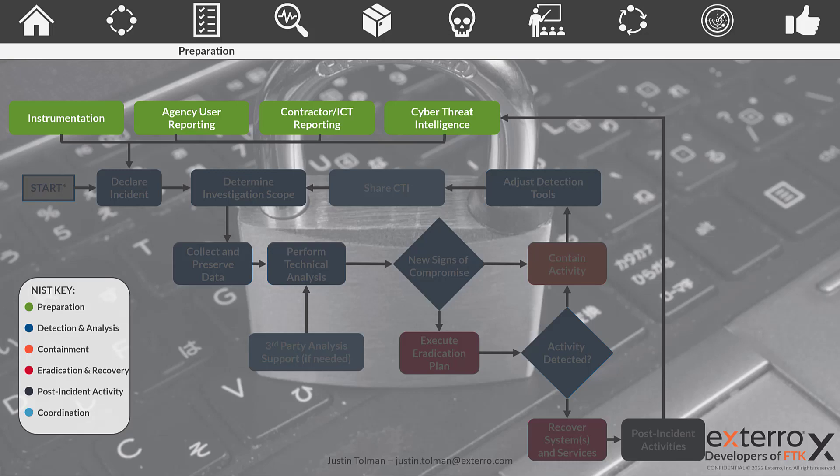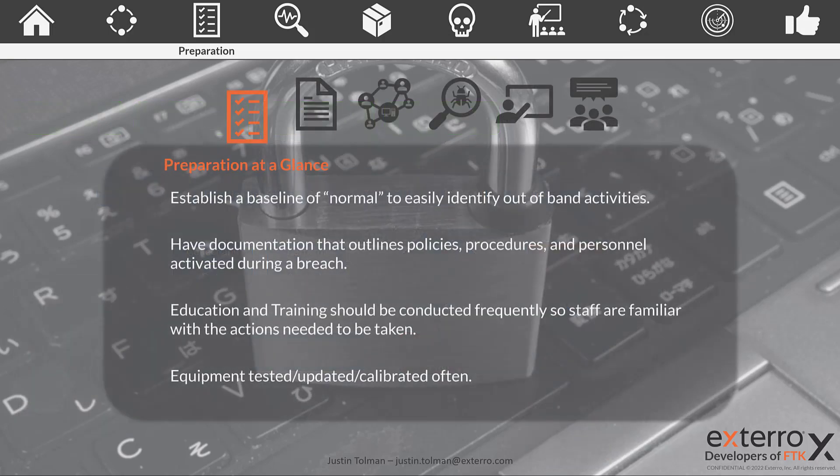So what are we hoping to accomplish in the preparation phase? We want to establish a baseline of what is normal within our network. That includes a bunch of different things: what is normal for a person or department to have access to, what is normal network traffic, what are normal applications and services that are going to be running on our network. That way, when something not normal or out of band happens, we can more easily identify those events.